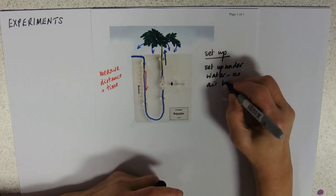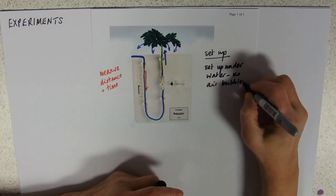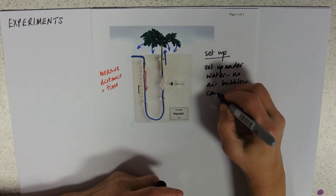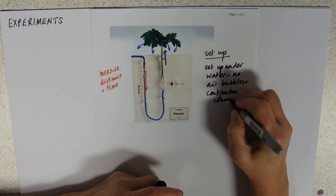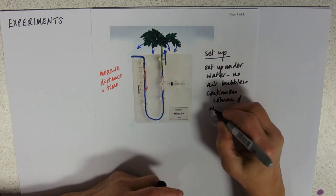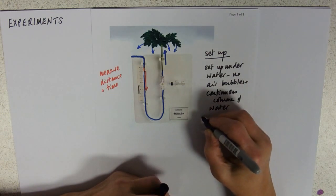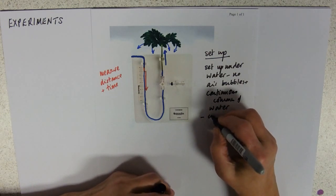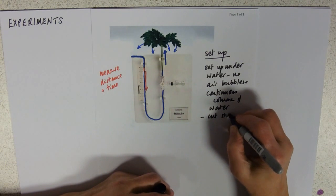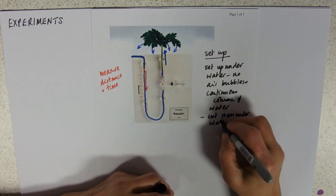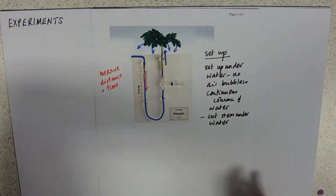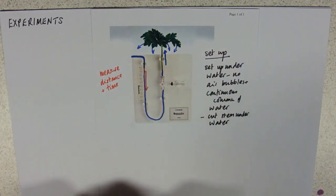And a continuous column of water. Alongside that, you have to cut the stem under water. again to maintain that column of water so that it will pull things up.